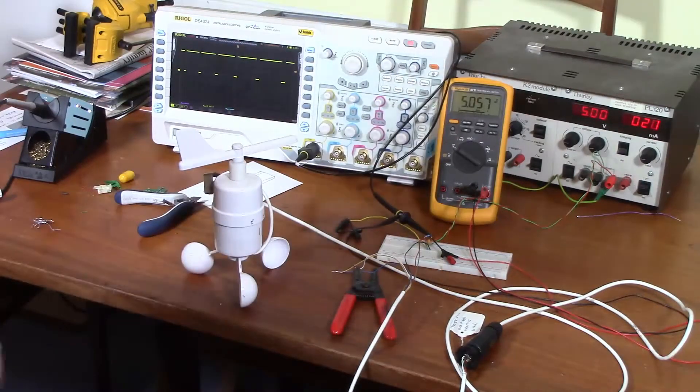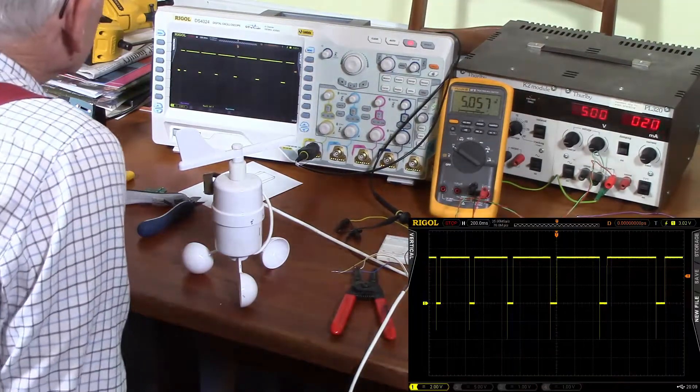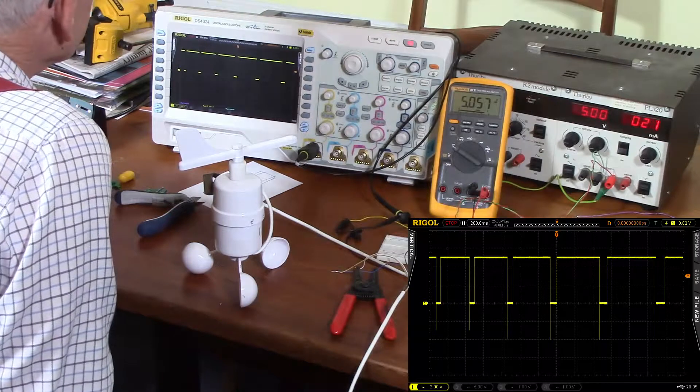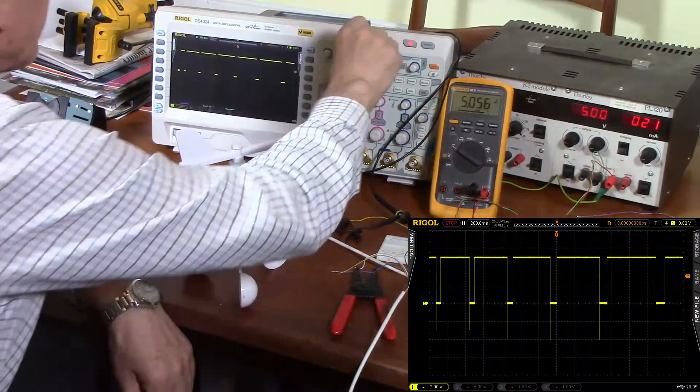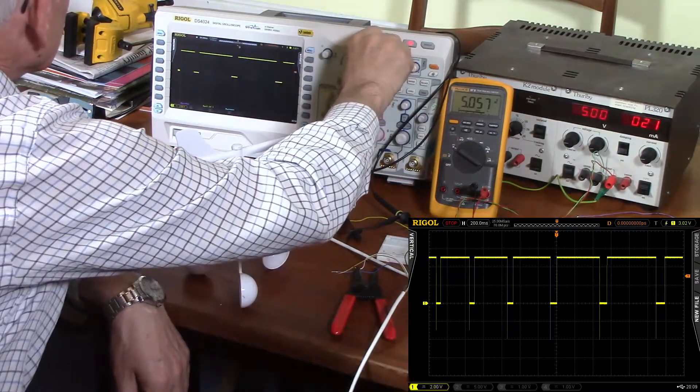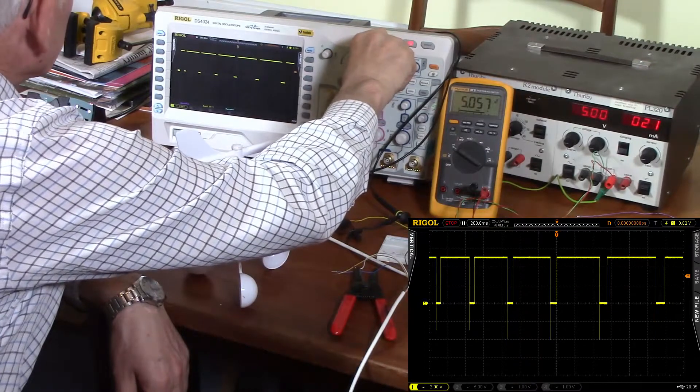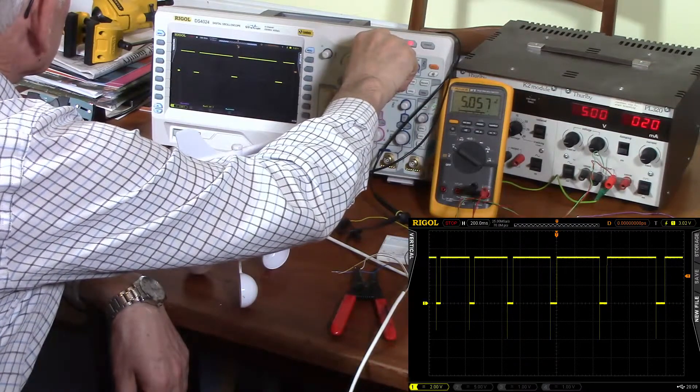Well that's a nice clear square wave. It's got an enormous negative spike on it. Which is quite surprising to me.